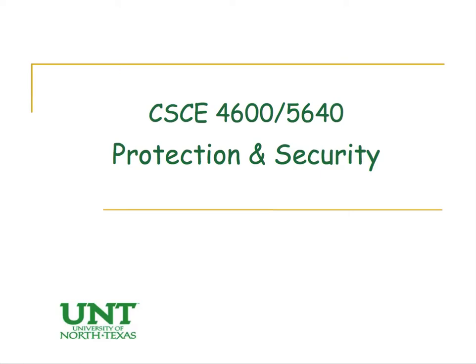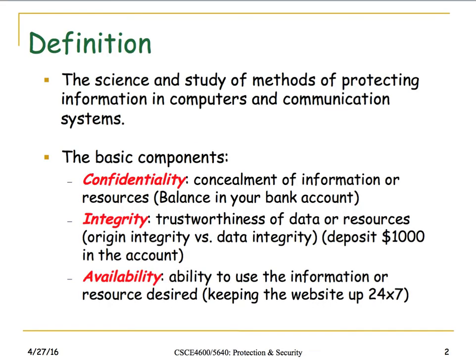It's time for us to finish up this short discussion of protection and security. We started on this in class the other day and talked about some basic definitions about CIA — confidentiality, integrity, and availability — which are the issues we need to address when protecting information in both computers and communication systems.